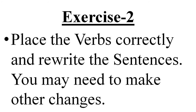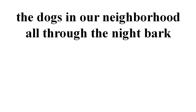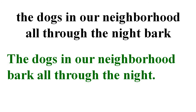Let's move to the next exercise. Here, you have to place the verbs correctly and rewrite the sentences. You may need to make other changes. The first is: 'The dogs in our neighborhood all through the night work.' First of all, we need to write the capital letter 'T'. Now, we have to put the verb in the correct place. Do you know what a verb in a sentence is? The word which shows action, being, or position is called a verb. So, which word shows action here? Bark. Bark is an action word. The correct place for the verb is just after the subject. So, we will put it after 'neighborhood.' From 'the dogs' till 'neighborhood' is the subject. The sentence will be: 'The dogs in our neighborhood bark all through the night.'